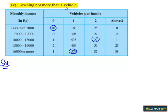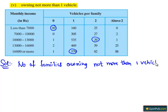Number of families owning not more than one vehicle equals to number of families owning zero vehicle plus number of families owning one vehicle